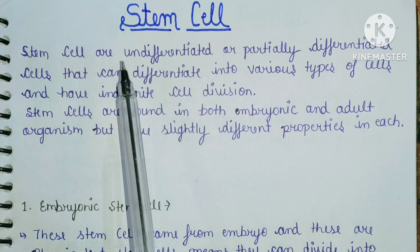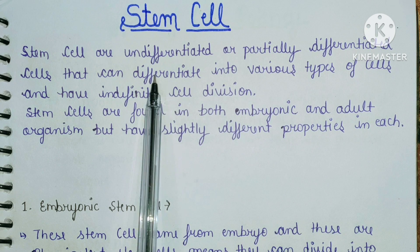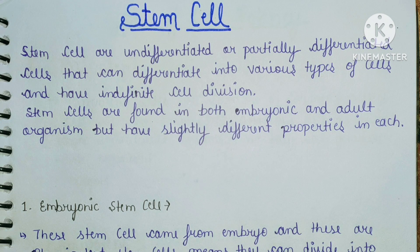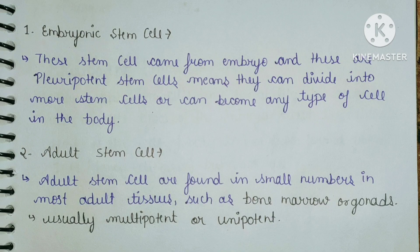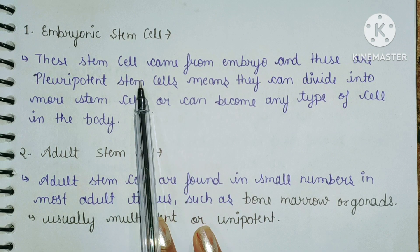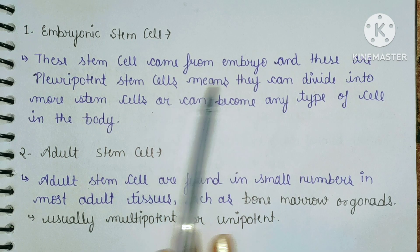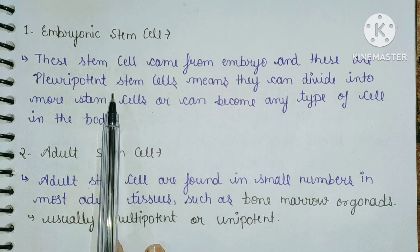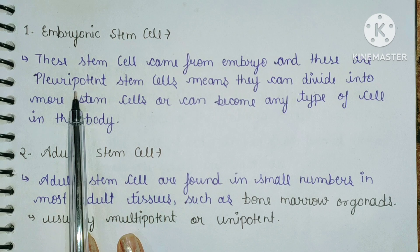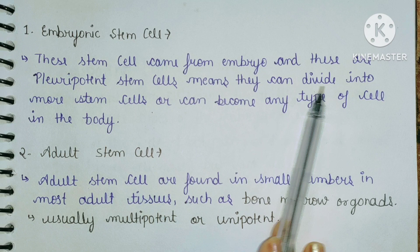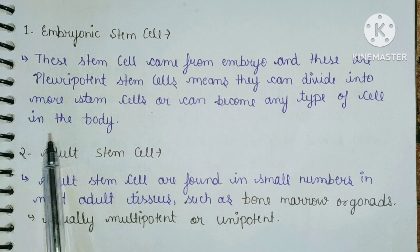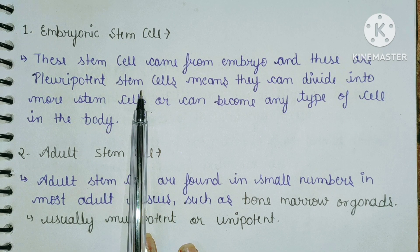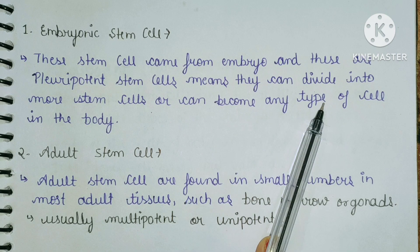Stem cells are undifferentiated cells, and these are pluripotent cells. Pluripotent stem cells means they can divide into more stem cells or can become any type of cell in the body. Embryonic stem cells come from the embryo and they are pluripotent, meaning they can divide into many types of cells.